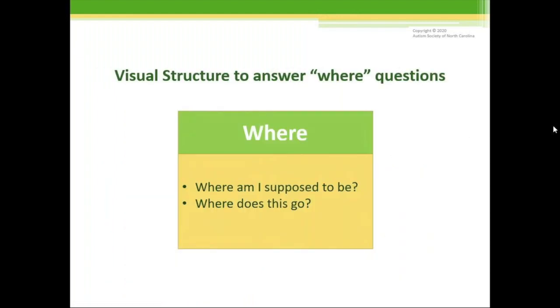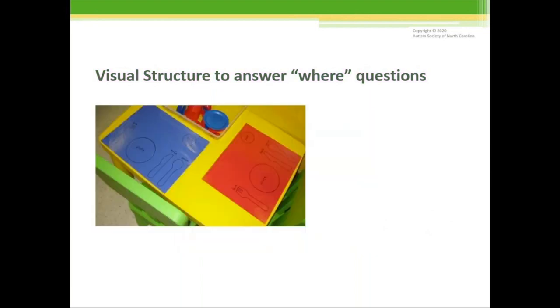Visual structure to answer where? So these are going to answer, where am I supposed to be? Where does this go? The first example we have is for setting the table. You can make placemats easily out of construction paper and outline where each item goes. I know this example is a play set, but it can easily be transferred over to dinner time. It also answers the question of what do I need? How much of it do I need?